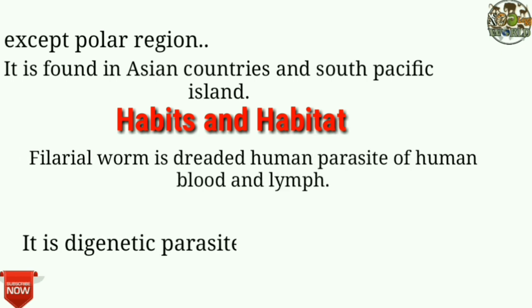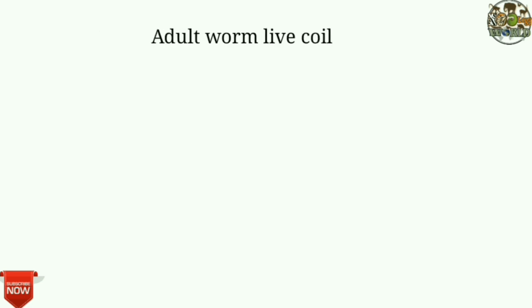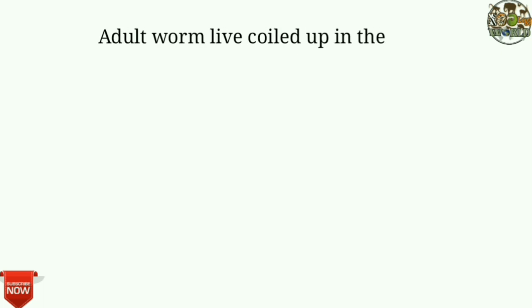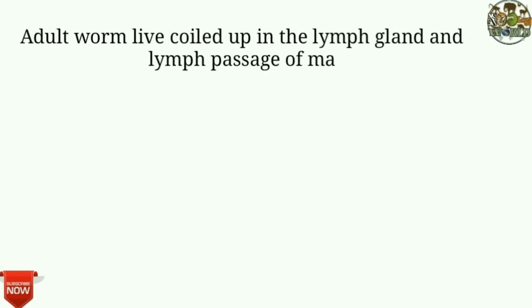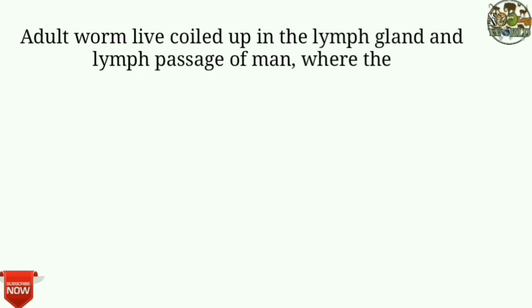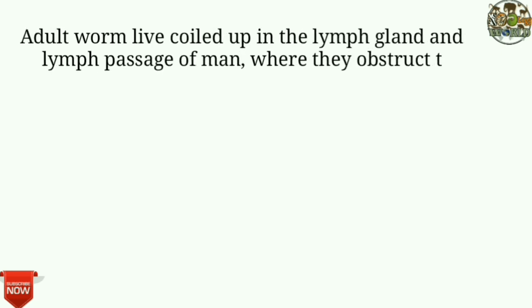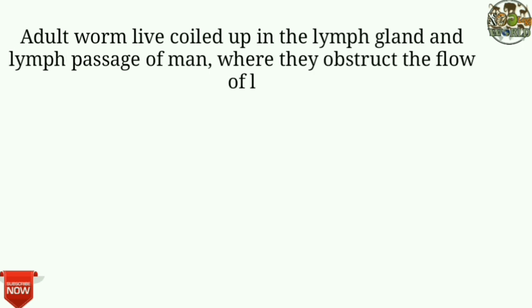It is a digenetic parasite, with the first host being man and the second host being the mosquito. Adult worms live coiled up in the lymph glands and lymph passages of man, where they often obstruct the flow of lymph.